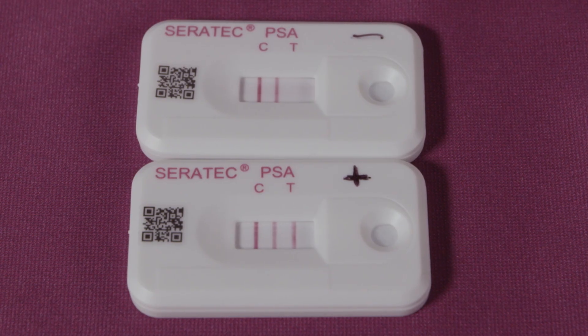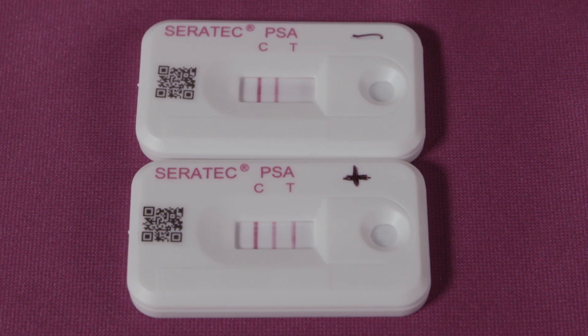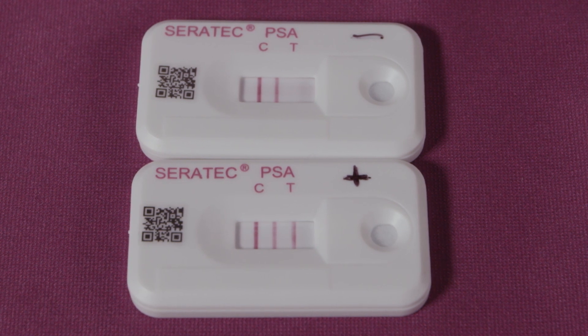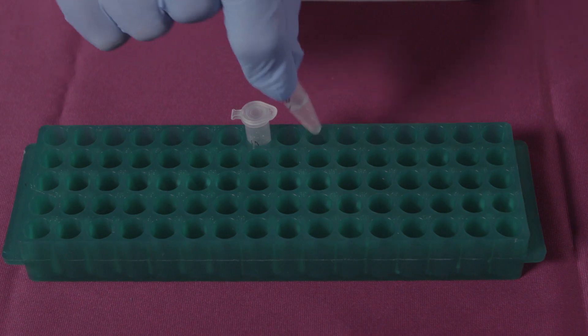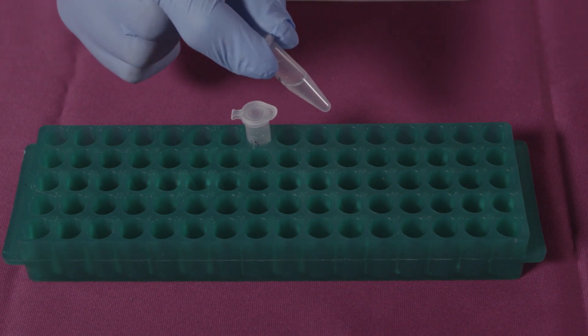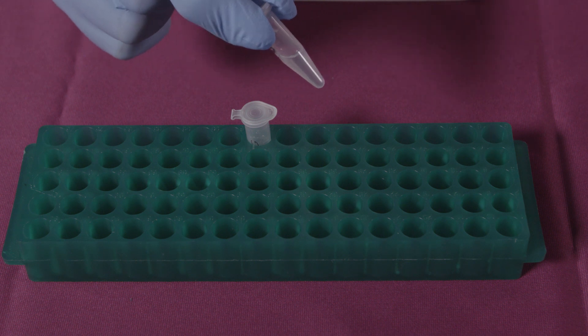A positive result will show three lines. A negative result will show two lines. If the control line should not develop, the result is invalid and the test should be repeated. The buffer is PBS and the remaining extract may be retained for DNA analysis.